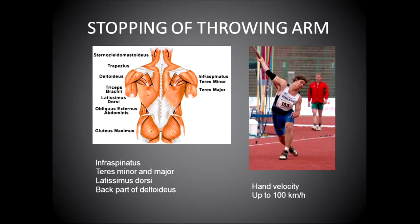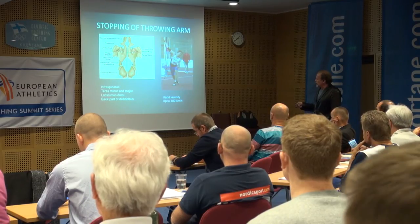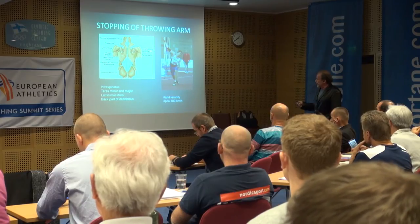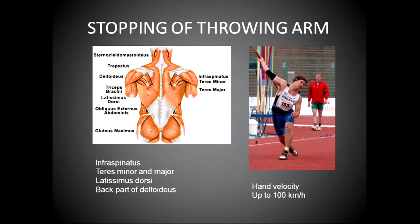The velocity of the hand is 90 to 100 km per hour. The hand should be stopped so that it is not following the javelin. The muscles that take care of this stopping function are the outer rotators — infraspinatus and teres minor muscles — and in addition, teres major, latissimus dorsi, and the back part of the deltoid muscle. So they take care of stopping the arm after release.